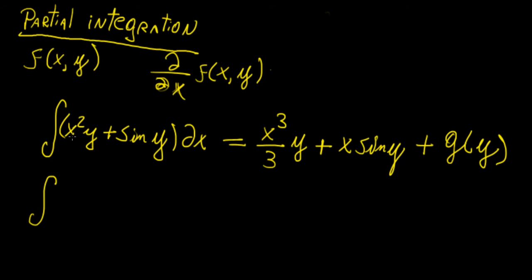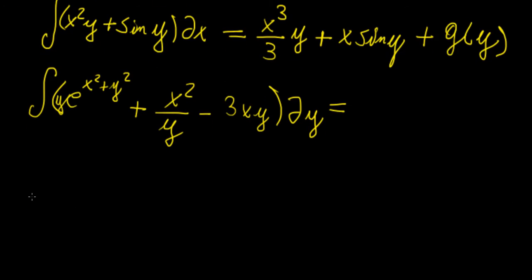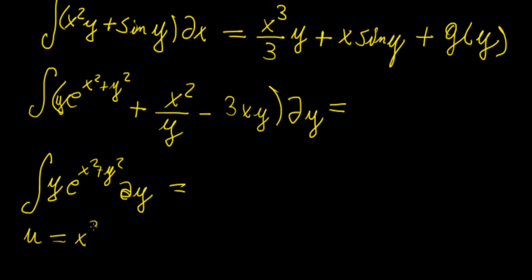For another example, let's take e^(x²+y²) + x²/y − 3xy and integrate this with respect to y. For the first term, y·e^(x²+y²), let's introduce a substitution: let u = x² + y², so the partial of u with respect to y is 2y. We can multiply and divide by 2 so that we have 2y in the integrand, giving us ½ times the integral of e^u with respect to u.